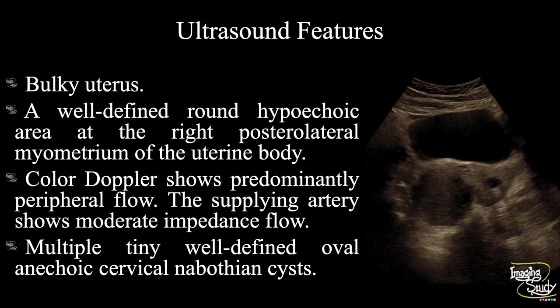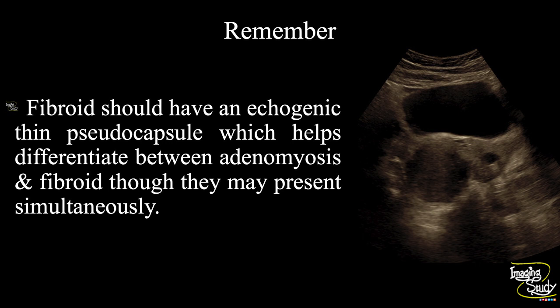In summary, a bulky uterus is seen. There is a well-defined round hypoechoic area at the right posterolateral myometrium of the uterine body indicating a uterine fibroid. Color Doppler shows predominantly peripheral flow, and the supplying artery shows moderate impedance flow. There are also tiny well-defined oval anechoic cystic spaces at the cervical region indicating nabothian cysts. The take-home message: the fibroid should have an echogenic thin pseudo capsule, which helps differentiate between adenomyosis and fibroid, though they may present simultaneously.